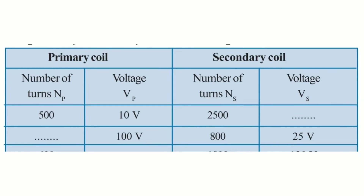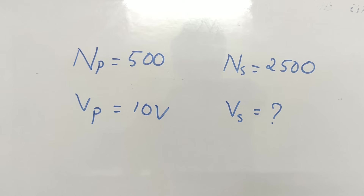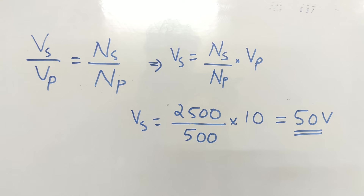Now let's do some problems. We have a table with: primary coil number of turns Np, primary voltage Vp, secondary coil, secondary voltage Vs, and secondary number of turns Ns. We fill in the given values to solve each problem.